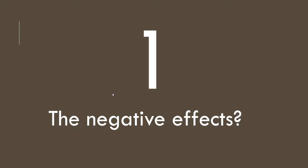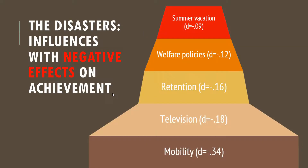The first topic is negative effects. John Hattie said that the things that create a negative effect are mobility, television, retention, and welfare policy. Most of these are not directly suitable for Thailand's context.